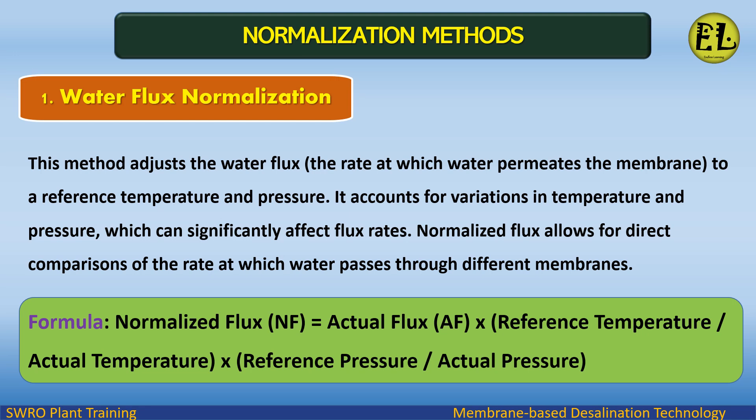Water flux normalization: this method adjusts the water flux — the rate at which water permeates the membrane — to a reference temperature and pressure. It accounts for variations in temperature and pressure, which can significantly affect flux rates. The formula is: Normalized Flux (NF) = Actual Flux (AF) × (Reference Temperature / Actual Temperature) × (Reference Pressure / Actual Pressure).